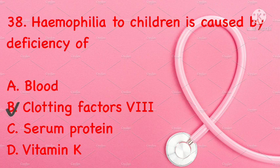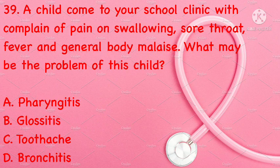Hemophilia in children is caused by deficiency of: blood clotting factor VIII, serum protein, or vitamin K. Correct answer is B: clotting factor VIII. A child presents with pain on swallowing, sore throat, fever, and general body malaise. The problem may be: pharyngitis, glossitis, toothache, or bronchitis. Correct answer is A: pharyngitis.